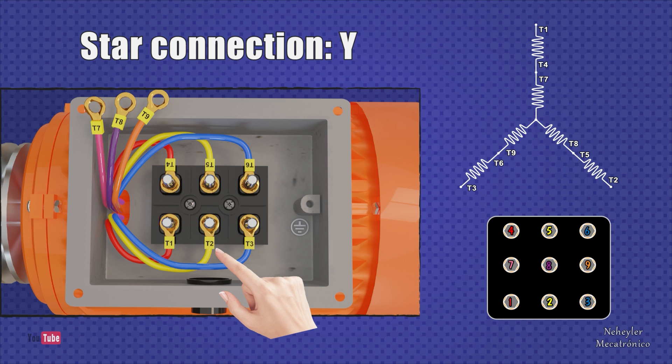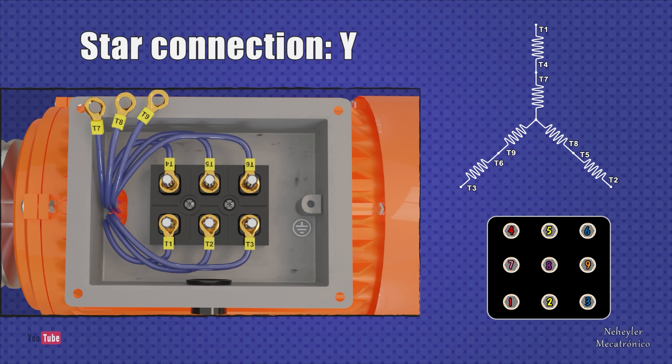The same happens with Terminals 2 and 5, which are yellow, and Terminals 3 and 6, which are blue. It may also be the case that the cables come in a single color, but depending on the label they come with, the connection that will be explained below can be made.